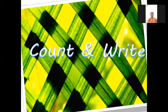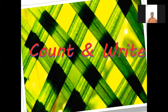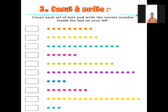Count and write. We will count the dots and write the numbers. Start counting: 1, 2, 3, 4, 5, 6, 7, 8, 9. So we write 9. Next: 1, 2, 3, 4, 5, 6, 7, 8, 9, 10.